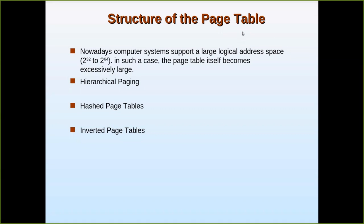In this video, we are going to see how the page table can be stored in the main memory. In previous videos, we saw that if the number of pages of a particular process is less than 256 entries, then it is better to use the register system — the CPU registers — because it avoids two memory accesses: one for the page table entry and another for the frame number.